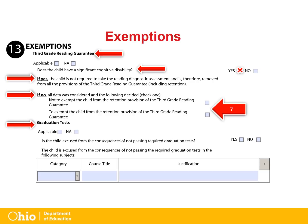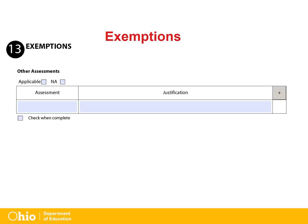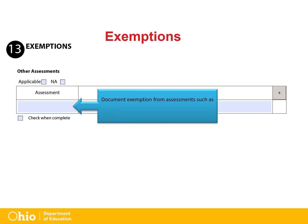For graduation tests in Section 13, the team is required to provide written justification of the IEP team's decision to excuse a student from the testing requirements. Choose the category in the first column, then type in the course title in the second column and add the justification for the exemption in the third column. In addition to graduation tests, Section 13 allows the district to consider other assessment exemptions, such as domains on the Ohio English Language Proficiency Assessment if applicable.